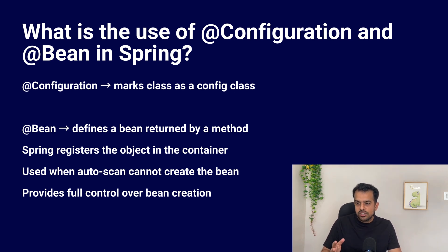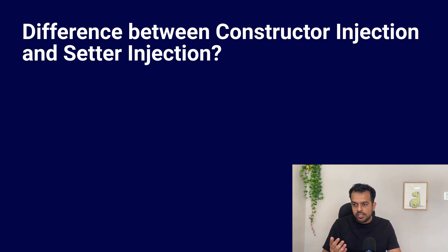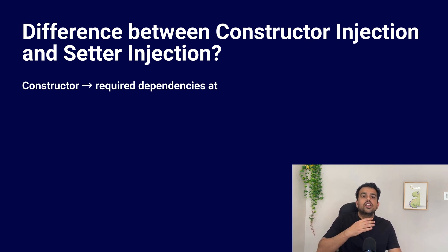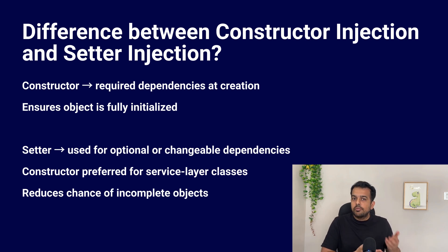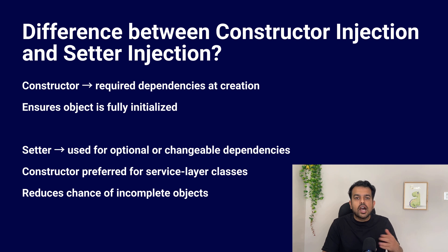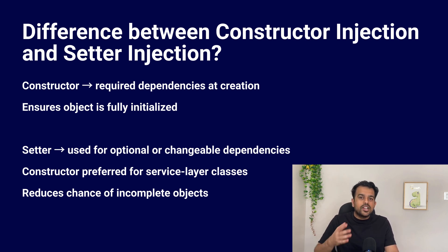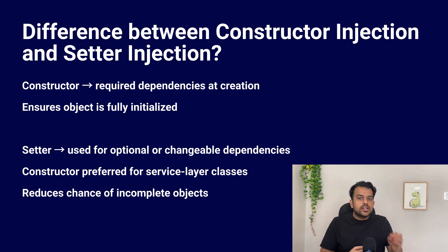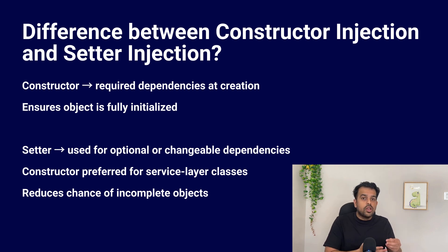Next question: what is the difference between constructor injection and setter injection? Constructor injection gives the dependency at the time of object creation — the class cannot start without required dependencies. In real projects, every service class that has a mandatory repository or client dependency should be injected through the constructor, because the object is always fully ready when the app starts; there's no chance of a half-built object. Setter injection is done after the object is created using setter methods — it is useful for optional dependencies or ones that can change later. Constructor injection is for must-have dependencies; setter injection is for optional or flexible ones. Most interviewers expect constructor injection as the best answer.